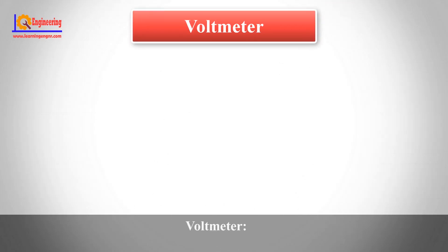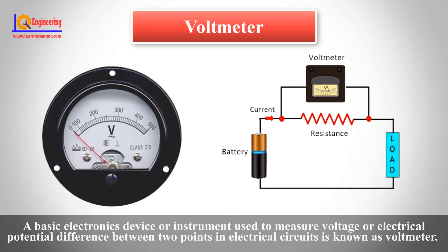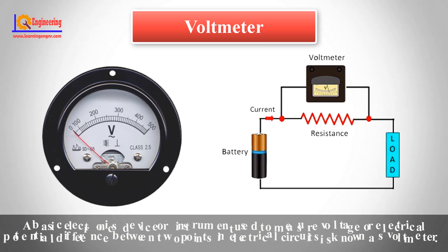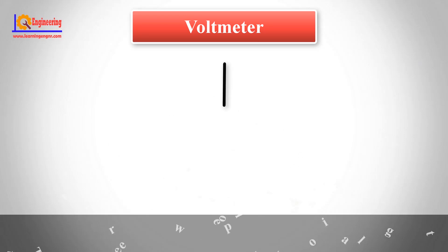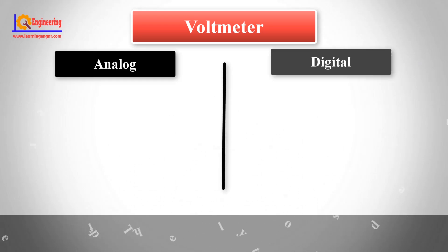Voltmeter: A basic electronics device or instrument used to measure voltage or electrical potential difference between two points in electrical circuits is known as a voltmeter. There are two types of voltmeters: analog and digital.